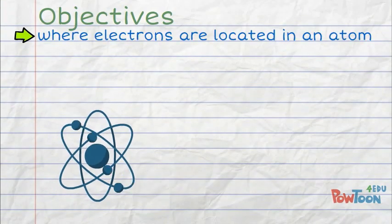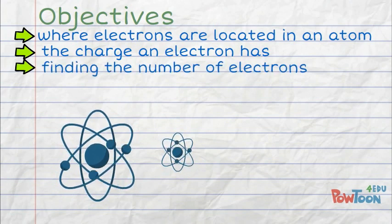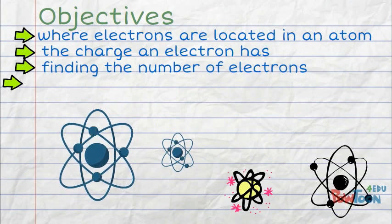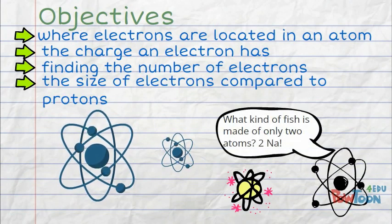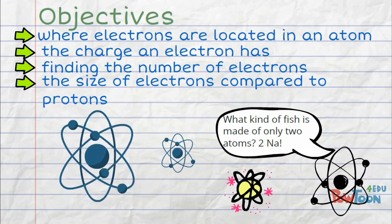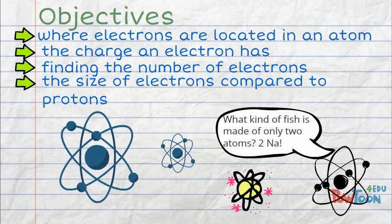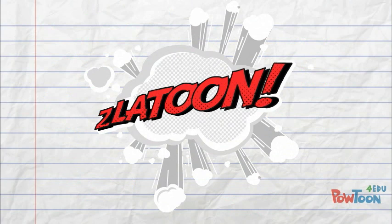Did you find all your objectives for your notes: where electrons are located in the atom, the charge an electron has, how to find the number of electrons, and the size of electrons compared to protons. Need to find more answers? Watch this again.